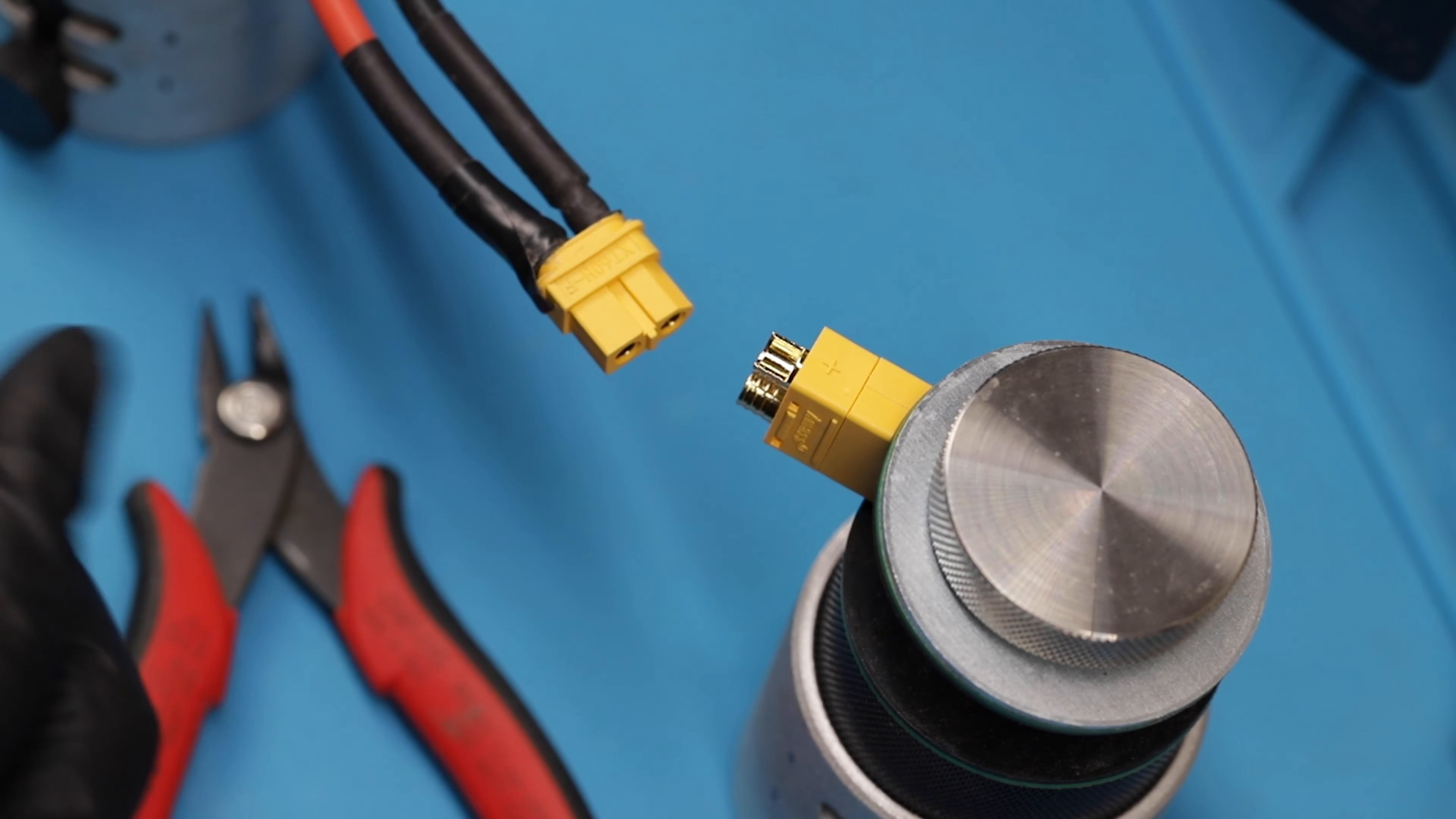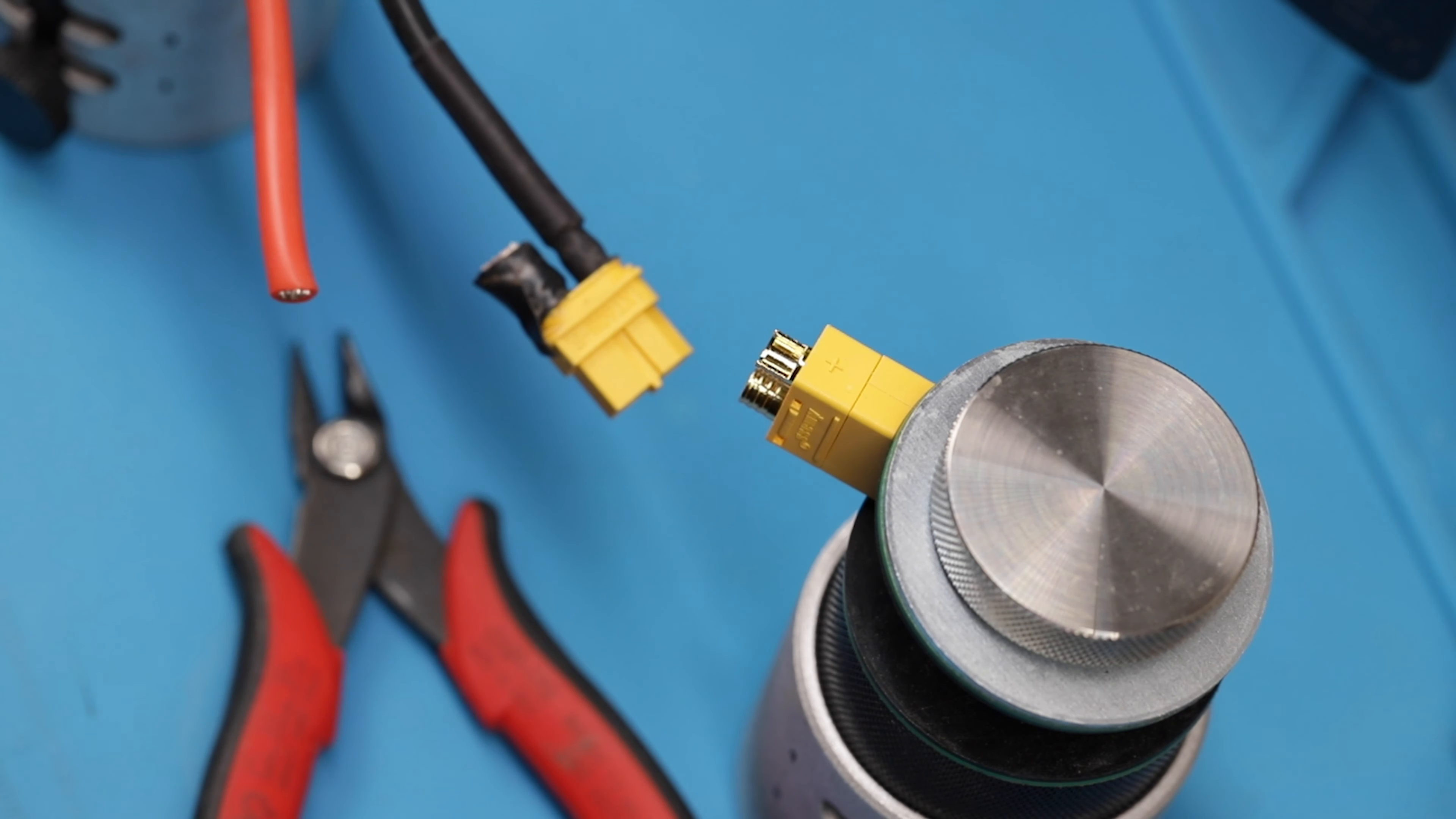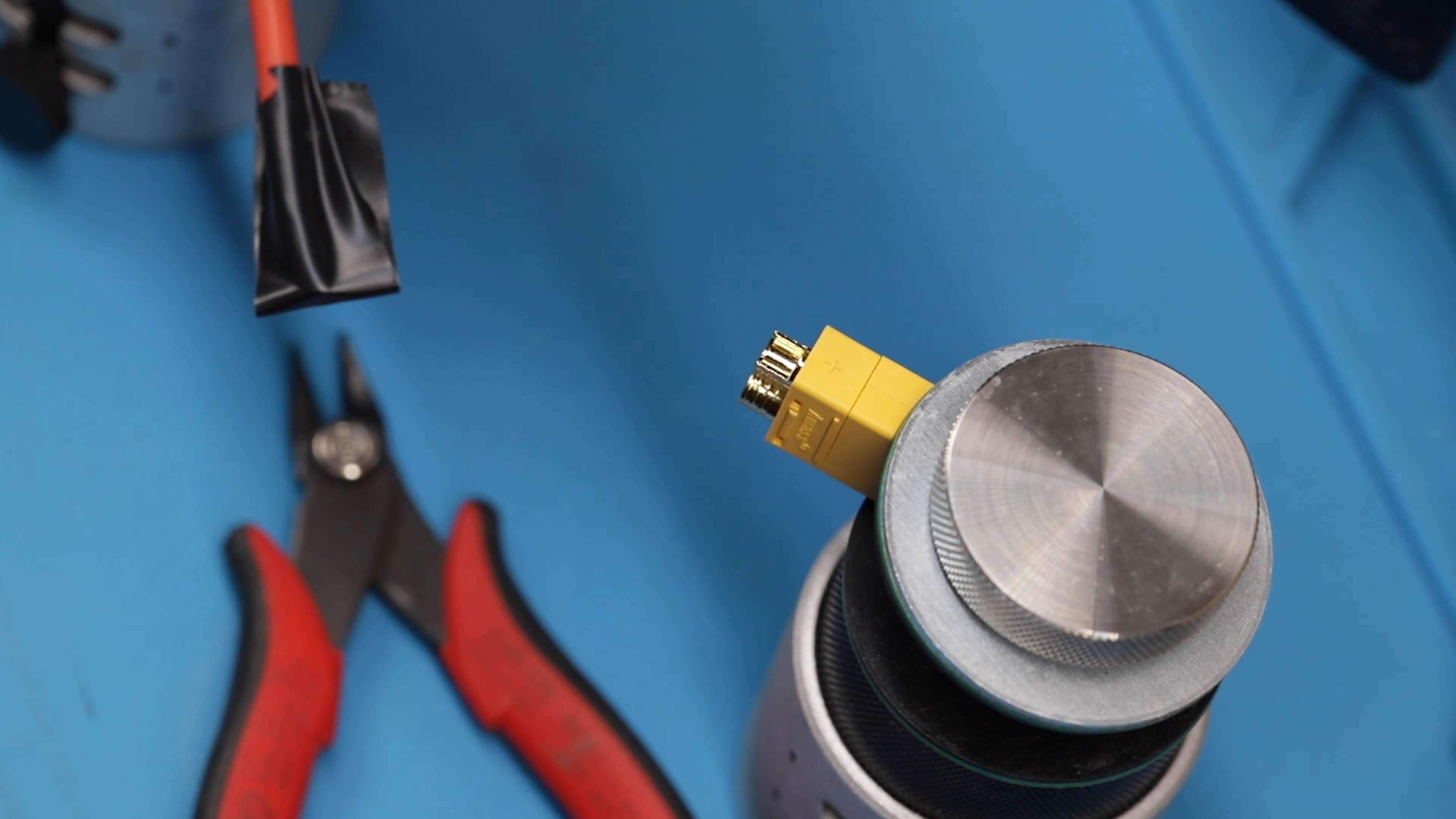So what I typically do is I'll cut one side, put a little bit of electrical tape around it and then cut the other. So I'll cut this side first. Notice I'm not anywhere near that other wire. What I'll do is I'll protect this until I'm ready to work with it and then cut the other side off.